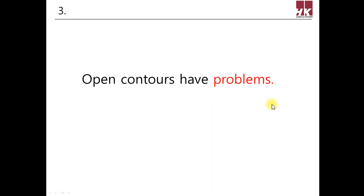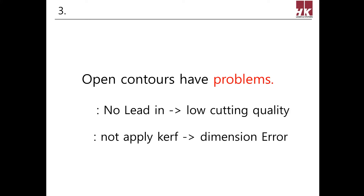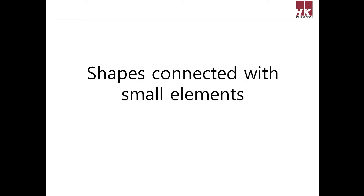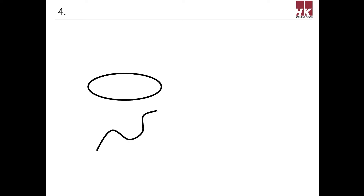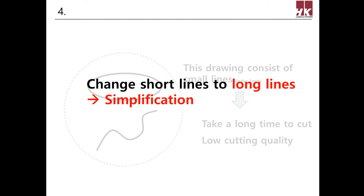In summary, open contours have no lead-in which causes low cutting quality, and no kerf offset which causes dimensional problems, so verify part must be done after import to correct all unexpected open contours. Now, how parts with small elements can be made and how to correct them if they exist. When importing drawings with ellipses or free curves, these parts consist of many small elements such as text or sculpture. To solve this problem, changing small elements into longer ones is needed for lower time and better quality.